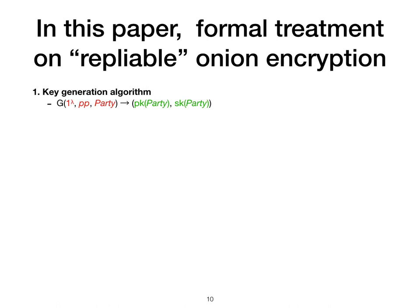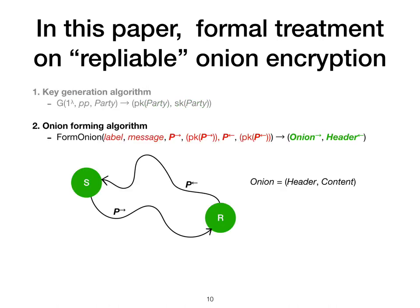In this paper, we formalize the notion of repliable onion encryption. An onion is a pair consisting of the header and the content. A repliable onion encryption scheme consists of four algorithms: the key generation algorithm G; the onion-forming algorithm FormOnion, which takes as input the label, the message, the forward path from the sender to the recipient, the return path from the recipient to the sender, and the public keys of the parties on the routing path; and outputs a list of onions corresponding to the forward path and a list of headers corresponding to the return path.